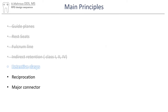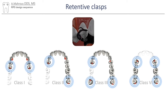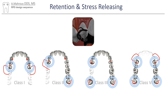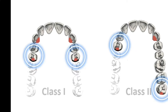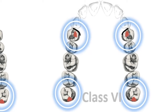Let's move on to the next step: retentive clasps. Retentive clasps are placed on teeth adjacent to the edentulous spaces. Additionally, each arch should have two to four clasps for adequate retention. Due to the need for stress breaking, the position of the rest seats on class 1, class 2, and class 4 cases will need to be changed for the use of an I-bar clasp. For more information on stress breaking, please refer to the video linked here.